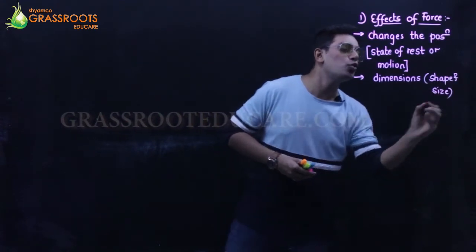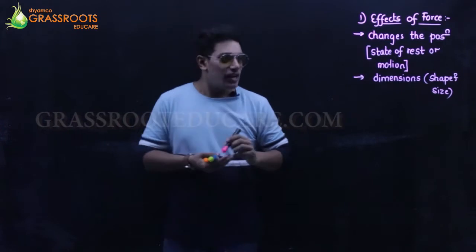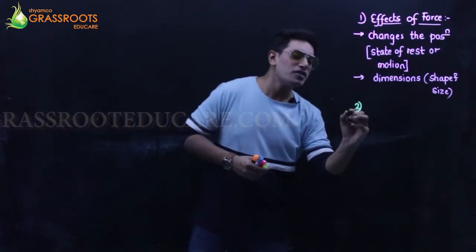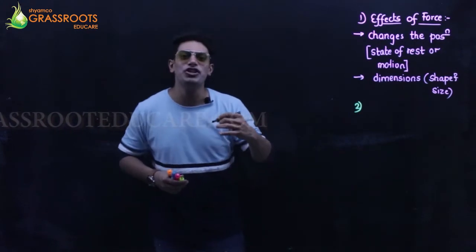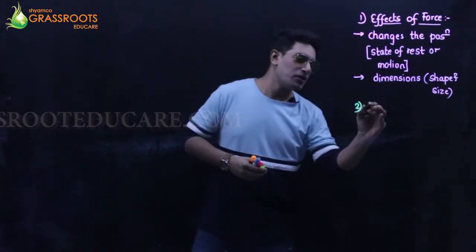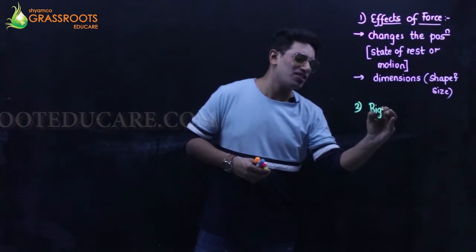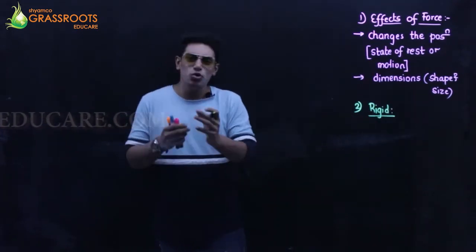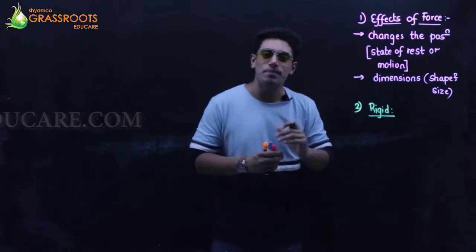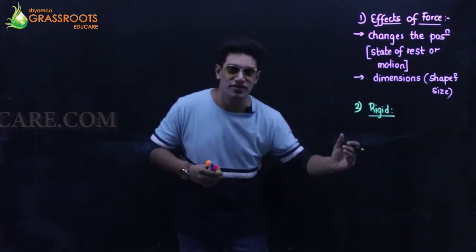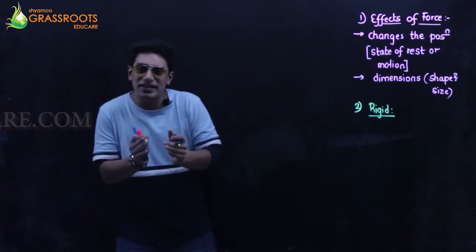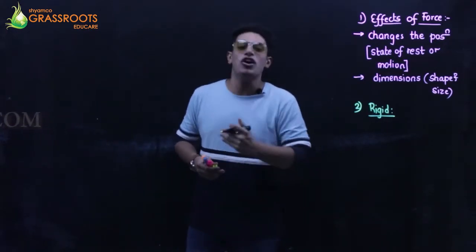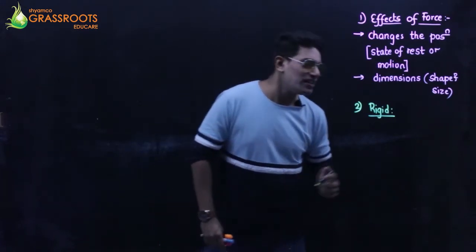That's what force can do. Now, how does a force act on a rigid and a non-rigid object? Rigid means something which is tough. When I apply force on a tough object, usually the dimensions don't change - only the position changes. If a body is moving, it comes to a stop, or a force can move a stationary object.